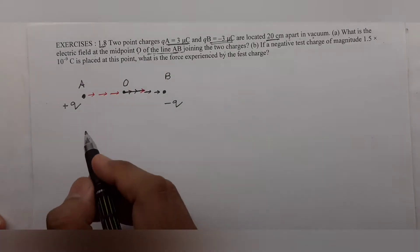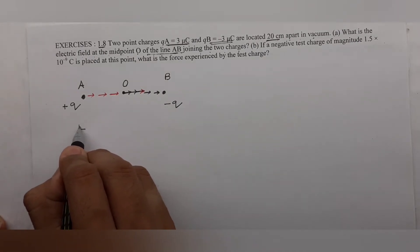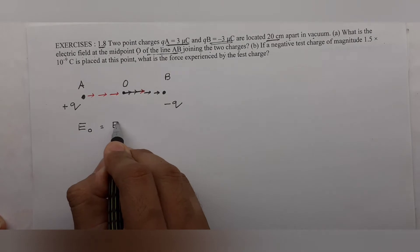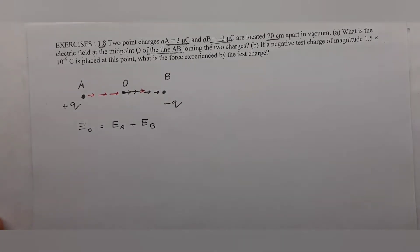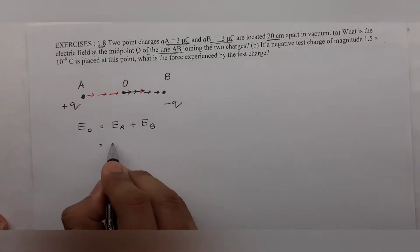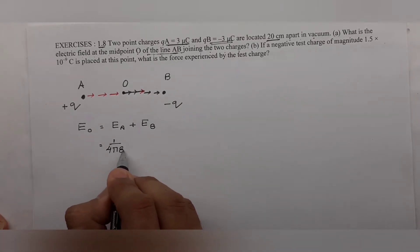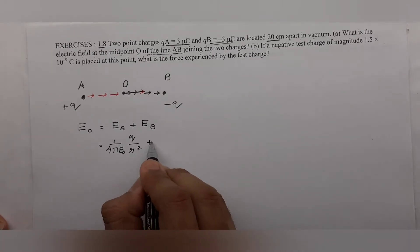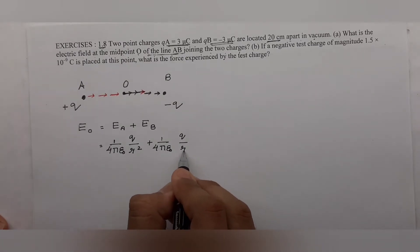The electric field at O is the sum of the two fields: Ea plus Eb. Now Ea and Eb are each equal to one over four pi epsilon-naught times q divided by r squared. Since both charges have the same magnitude, the total field is two times one over four pi epsilon-naught times q divided by r squared.